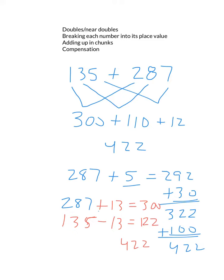So again, we have breaking each number into its place value, we've added up in chunks, we have compensation. You decide the one that works best for you. Every set of numbers is going to offer you a different opportunity to work with this.